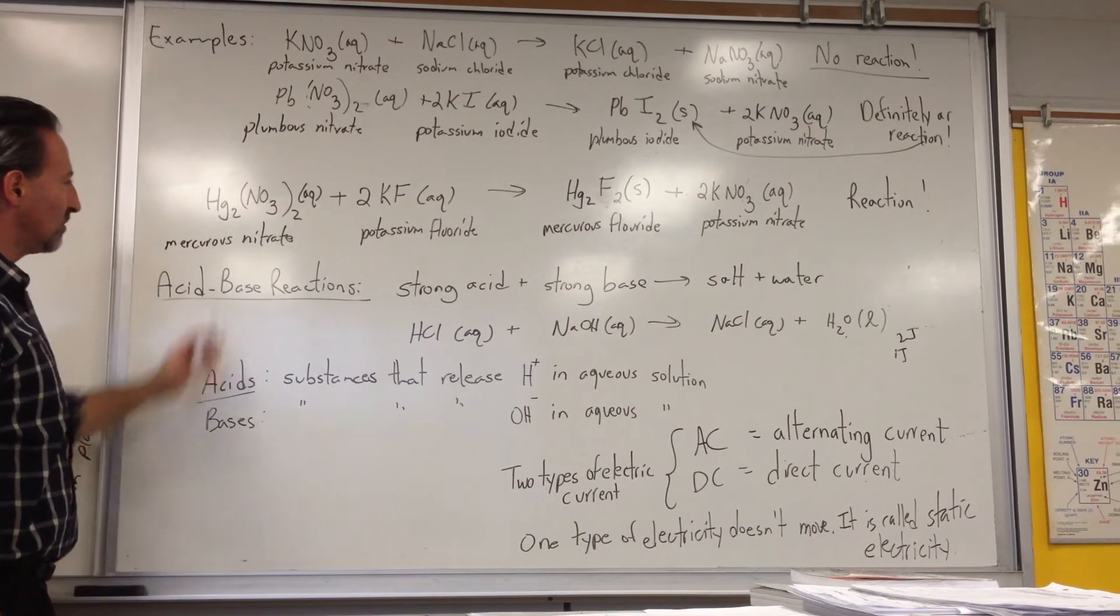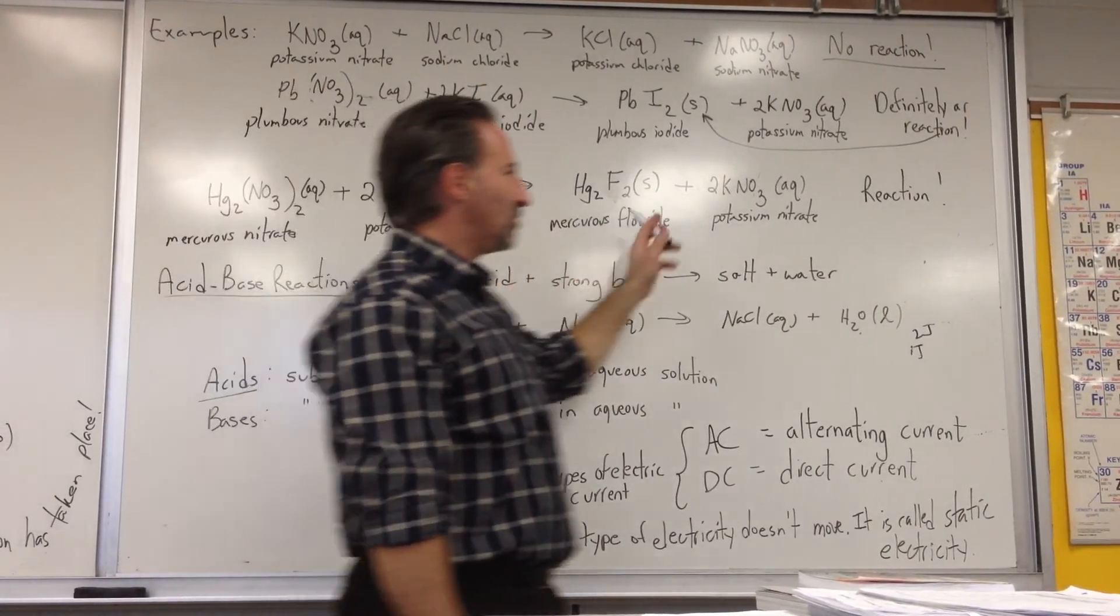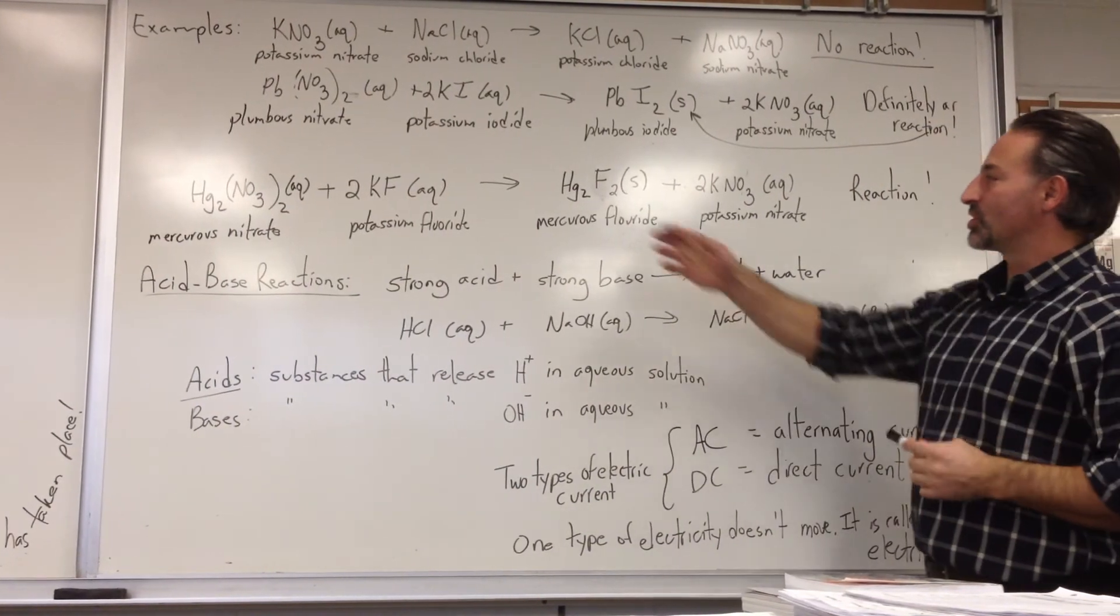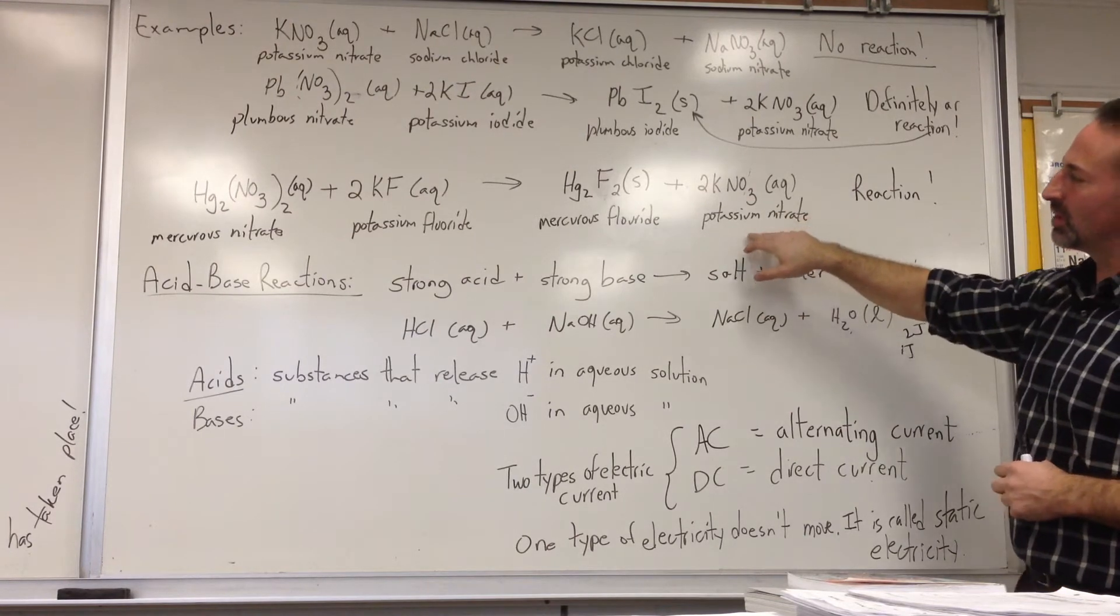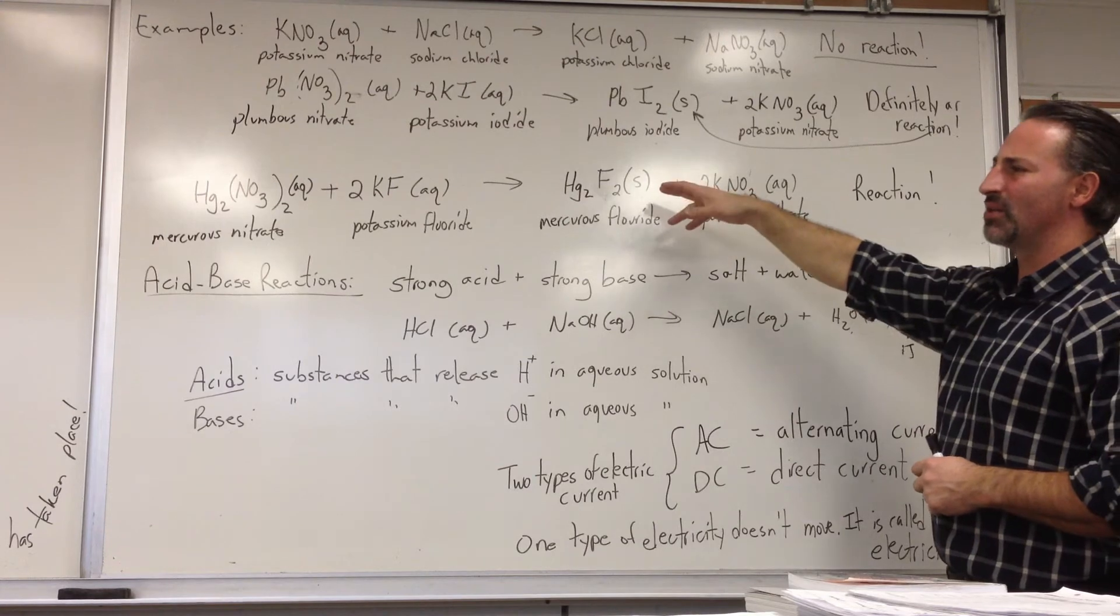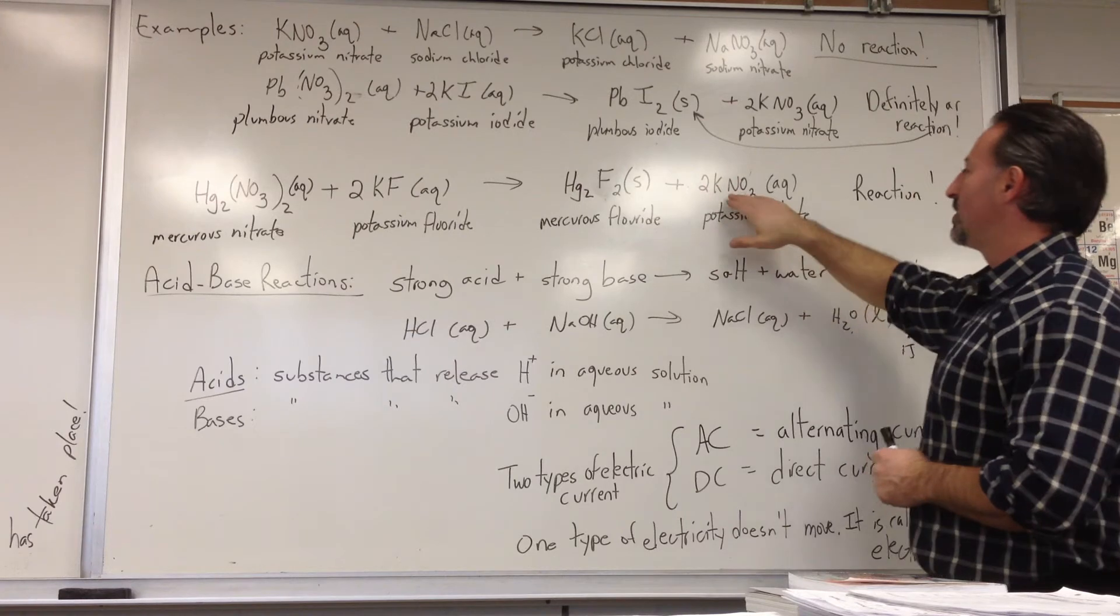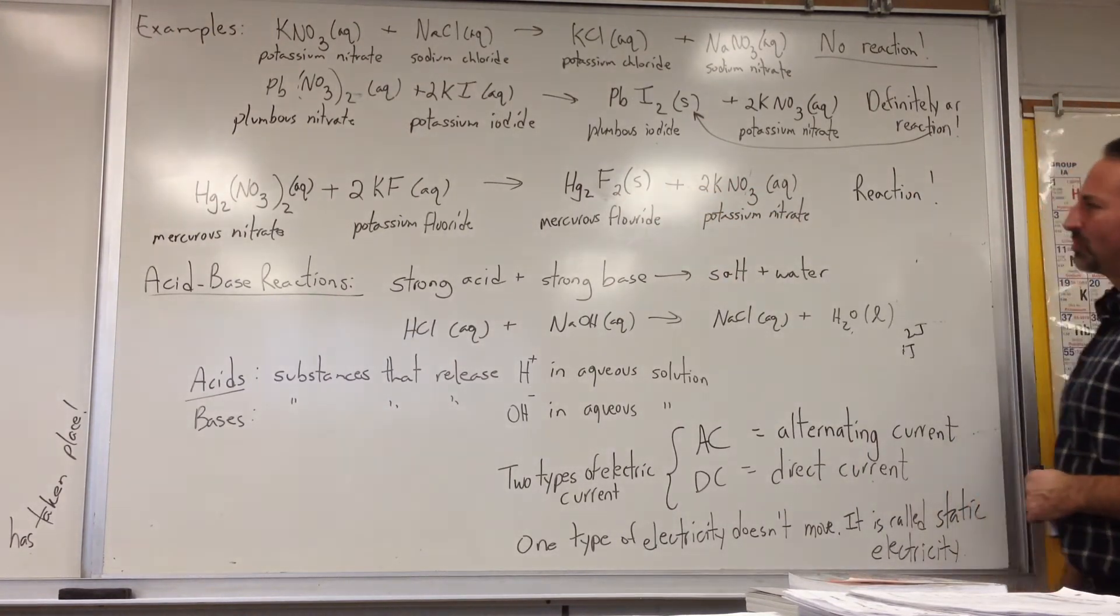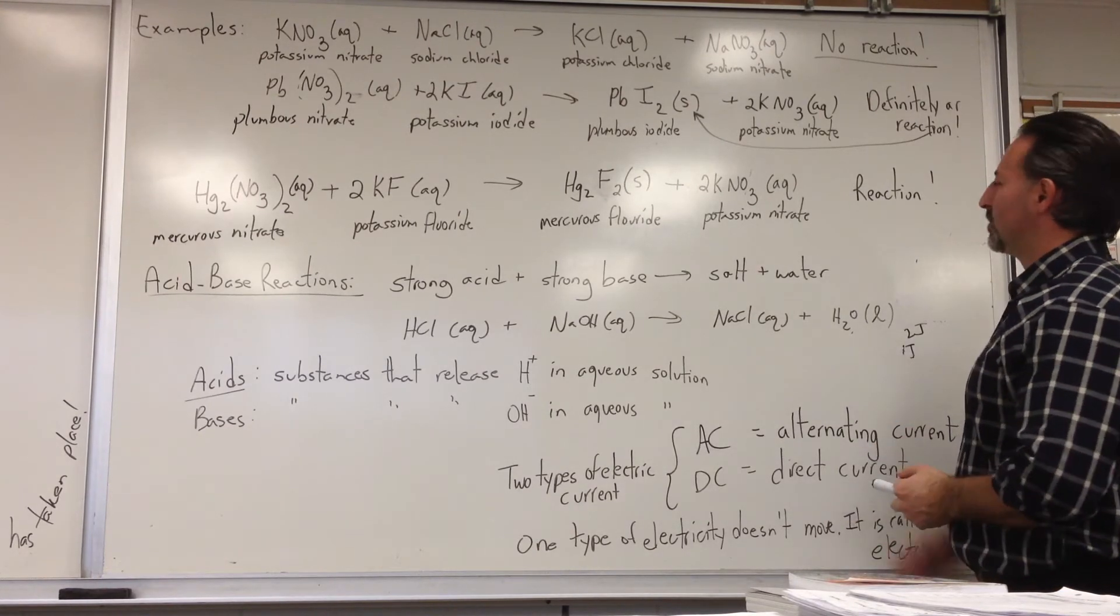So we have mercuris nitrate being mixed with potassium chloride. And if you do a double displacement reaction on it, you will get mercuris fluoride and potassium nitrate. And if you look up the solubility of mercuris fluoride, I think what happens is it actually breaks down when it's exposed to water. But there is a reaction. And this remains soluble. And that would be your salt. Actually what happens when you put that in water is you get mercuric oxide or mercuris oxide. But there is a reaction.